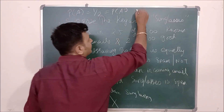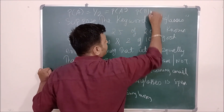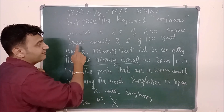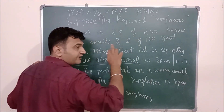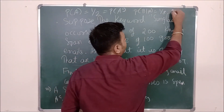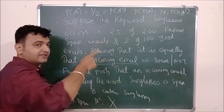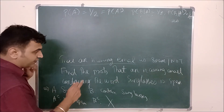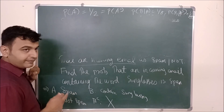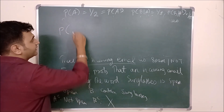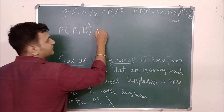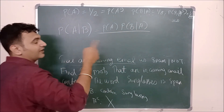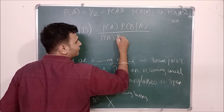P(B|A) is the probability that the email contains 'sunglasses' given it is spam, which is 25/200 = 1/8. P(B|A-complement) is the probability the word appears in a non-spam email, which is 2/100 = 1/50. We need to find P(A|B) — the probability the email is spam given it contains the word 'sunglasses'.